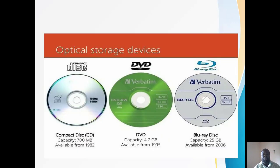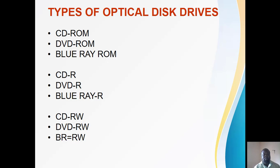These are the three types of optical storage devices: the compact disc (CD), the DVD, and the Blu-ray disc. To differentiate between them, you will see the name written on the disc — CD, DVD, or BD for Blu-ray. These labels are written on the optical discs for easy differentiation.